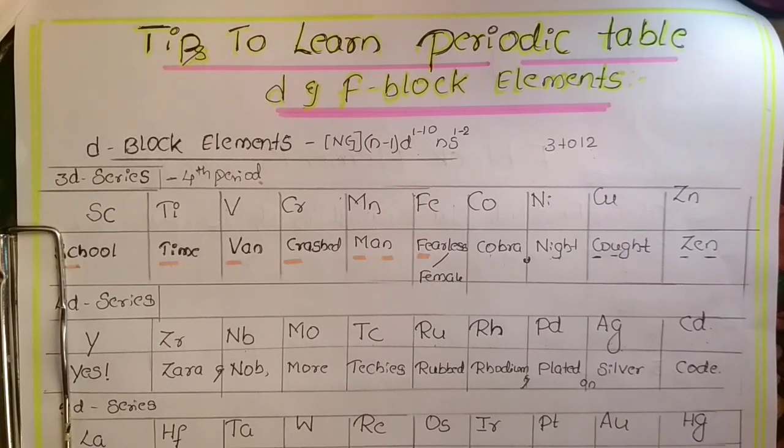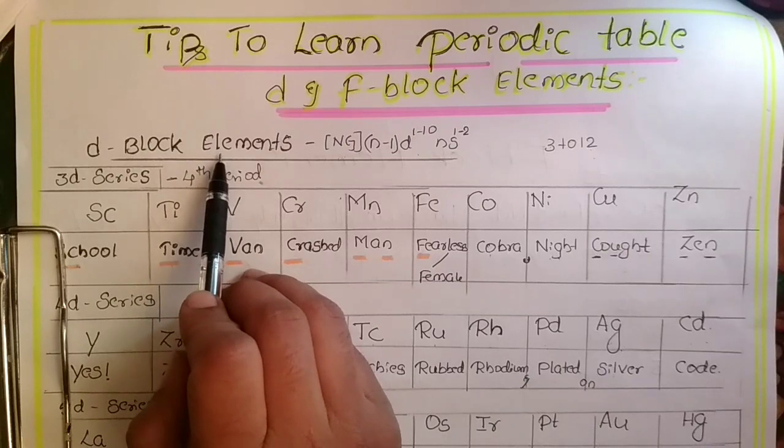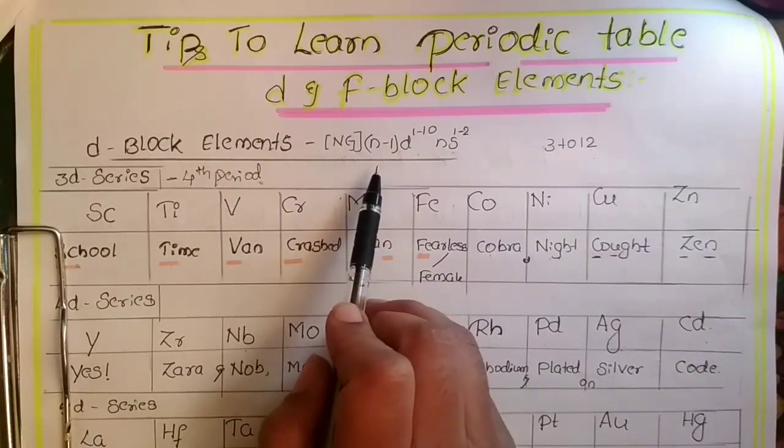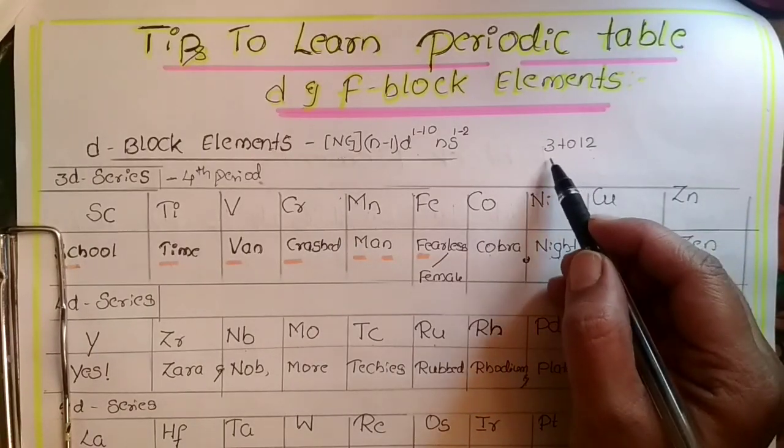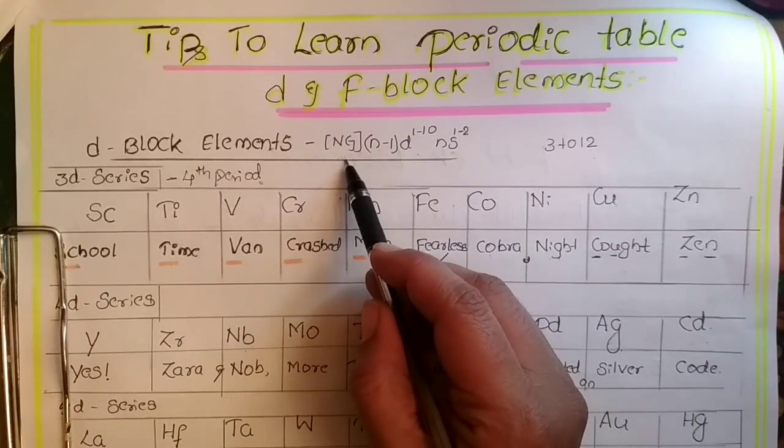We'll discuss D and F block elements. The D block elements are known as transitional elements. In your periodic table, they start from group 3 to 12 with a general electronic configuration given here.